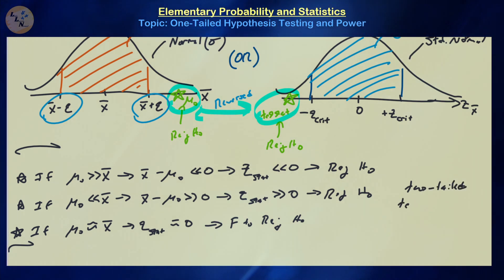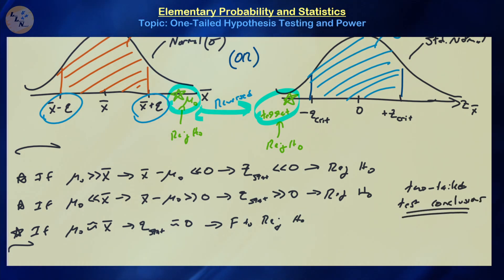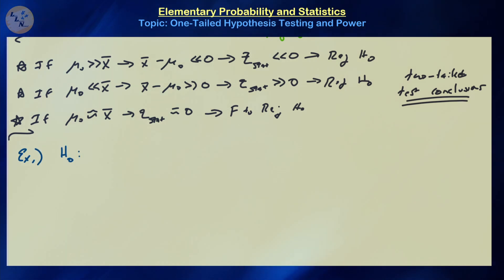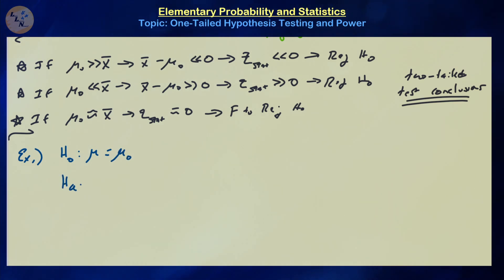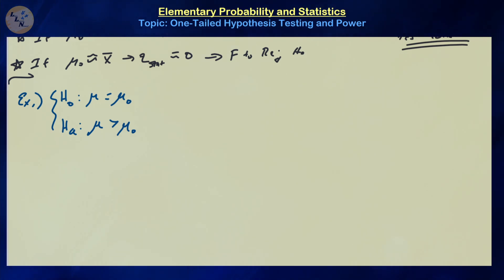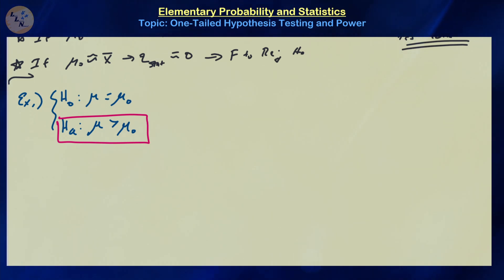Now let's see how things change when we switch to a one-tailed alternative. For the first scenario, let's assume the null hypothesis is again mu equals mu zero, but instead of the two-sided alternative, let's see what happens if mu greater than mu zero is chosen as the alternative hypothesis. Let's take a moment and interpret what this means in terms of what we're testing.